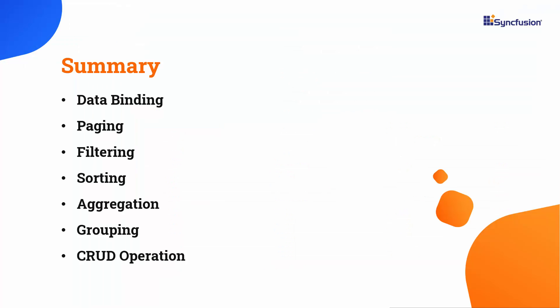Now let me summarize the key takeaways from this video. I covered data binding with a custom adapter and demonstrated various functionalities such as paging, grouping, filtering, and sorting. I also showed CRUD operations and how to aggregate records. For more information on the grid features, check out the documentation link in the video description. You can download the working code from the GitHub link in the description below. I've also provided a link where you can see if you qualify for a free community license to use all our Blazor products. Thank you for watching — if you found this video useful, don't forget to like and subscribe.